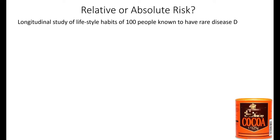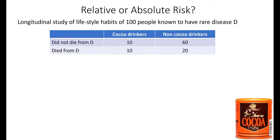We tracked all of the people known to have disease D as soon as they were diagnosed until sometime later — typically until they died or were fully recovered. With these types of studies, we look at all of their lifestyle factors: what kind of exercise they do, what type of food they eat, etc. There's a danger of doing that, which we looked at in a previous lecture. But let's suppose that we discover that drinking cocoa does seem to have a significant impact on risk of dying.